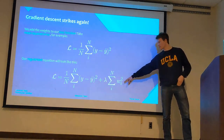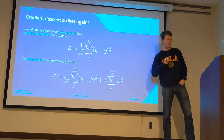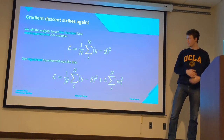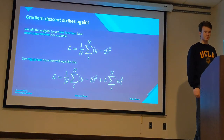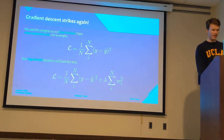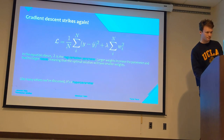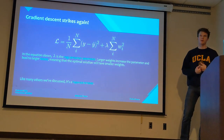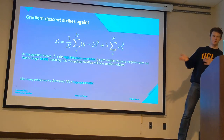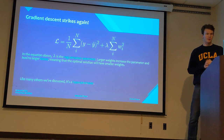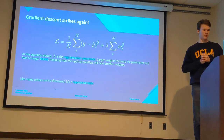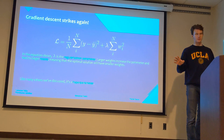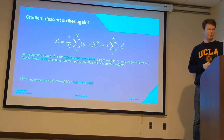We take the sum of the squares of all our weights, so as our weights get larger the loss also increases, and then we take the gradient of this loss function and do regular gradient descent. Lambda here is the regularization parameter — basically how much we care that our weights are big. If lambda is really large, all the weights are just going to go to zero, because it's going to dominate the loss term.